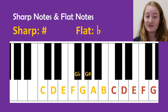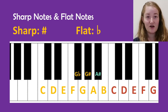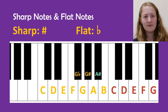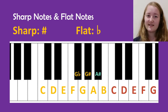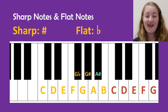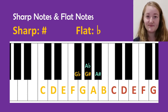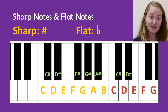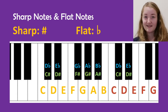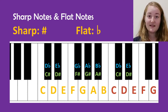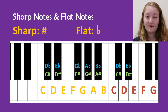Now let's look at the note A. The black note just above A is called A sharp. But what about the black note below A? We've already said this is called G sharp, but it has another name too: A flat. So above A is A sharp, and below A is A flat. Every black note on a piano has two names — something sharp and something flat.